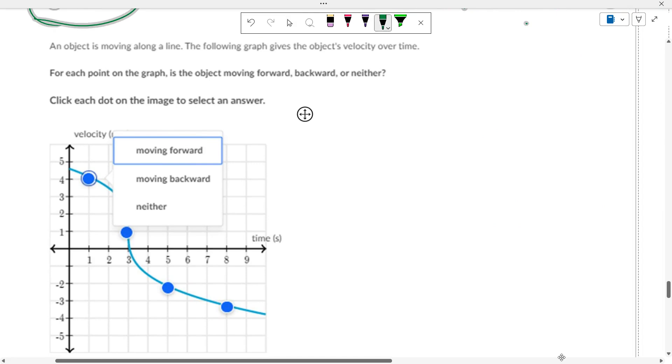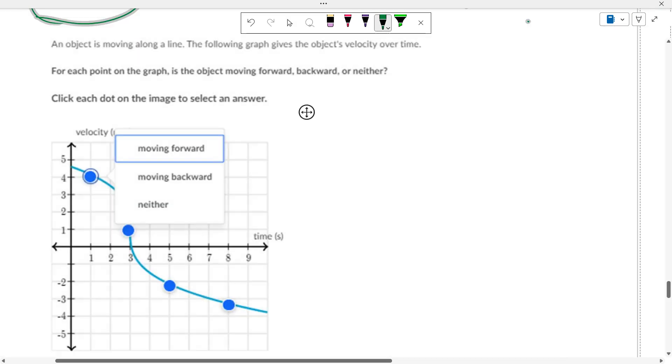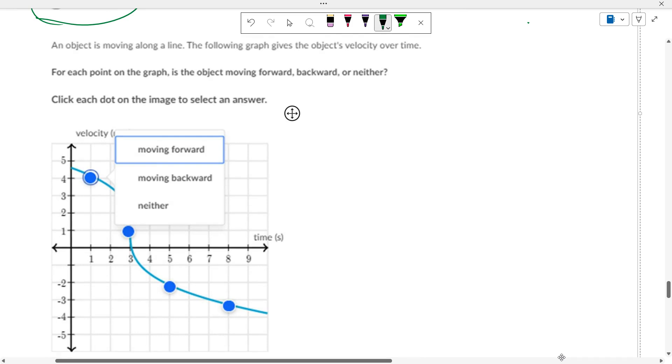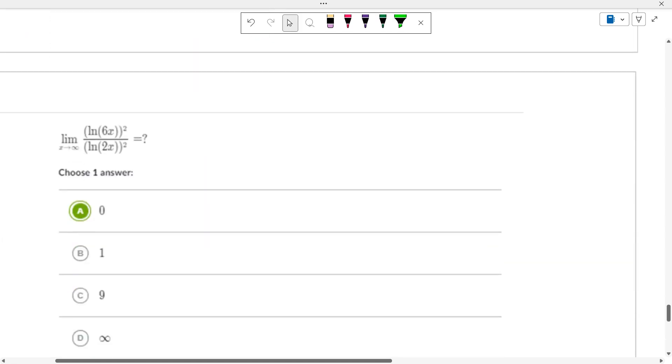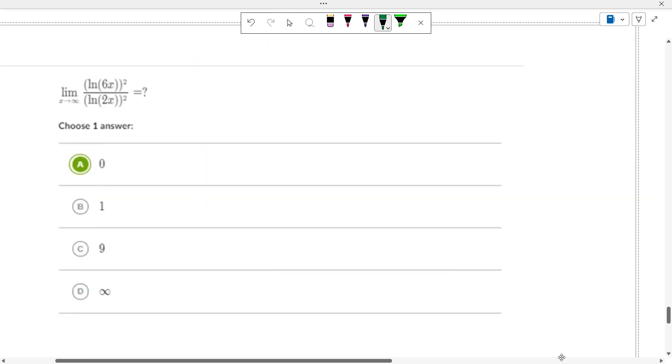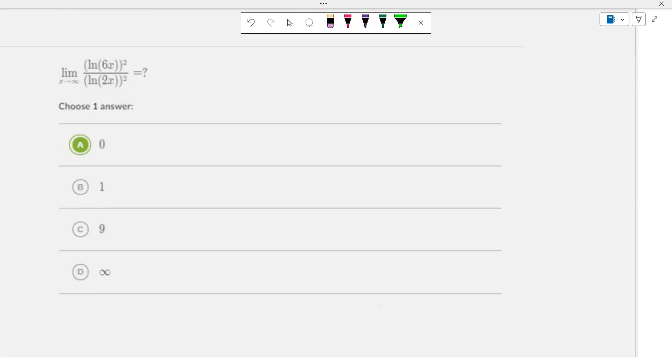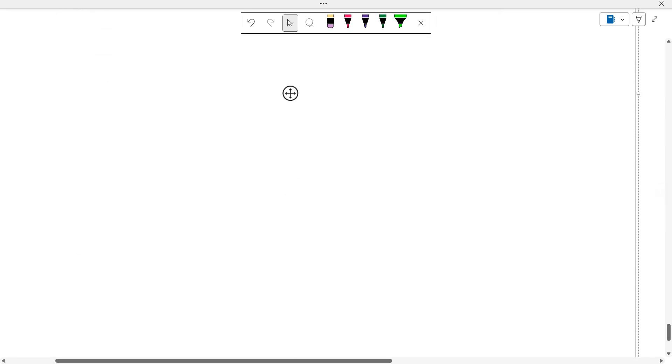Velocity versus time. So, this is slowing down, but it's moving forward because its velocity is positive. This one's moving backwards, this one's moving backwards because it's a negative velocity. That one is L'Hopital's rule. Do the derivatives twice and you'll get zero.